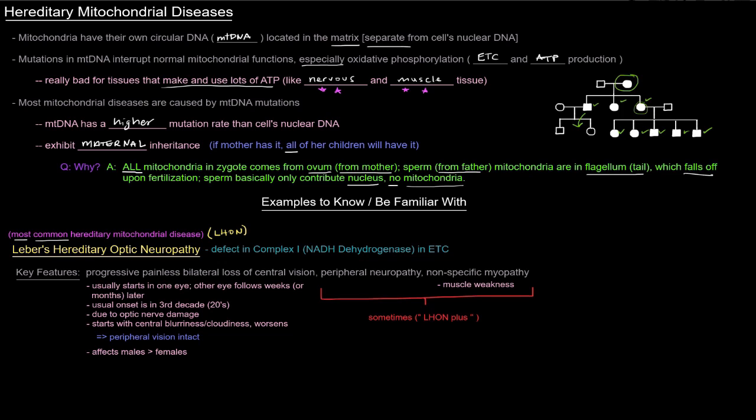This is a defect in complex one of the electron transport chain, or NADH dehydrogenase. Key features are progressive, painless, bilateral loss of central vision. That's pretty important; that's the key thing. It usually starts in one eye and the other eye follows a few weeks or a few months later.